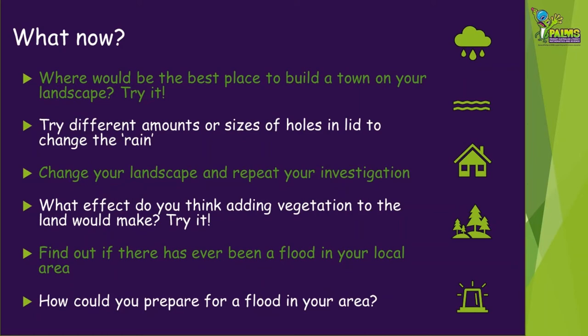Now that you've had a go at making your flooded landscape model, here are some other things you might like to think about or try. Where would be the best place to build a town on your landscape? Give it a try and test your model with simulated rainfall again. Try different amounts or sizes of holes in the lid of the bottle to change the amount of rain. You can change your landscape and repeat your investigation — what happens if you have higher hills or wider valleys? What effect do you think adding vegetation to the land would make? Give it a try.